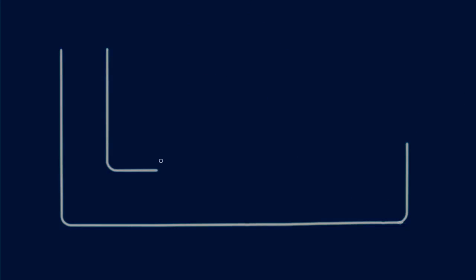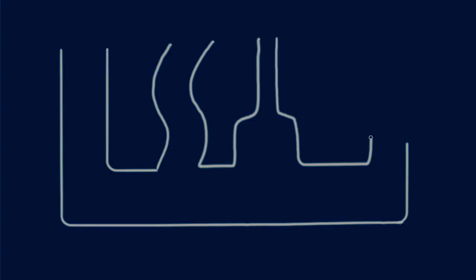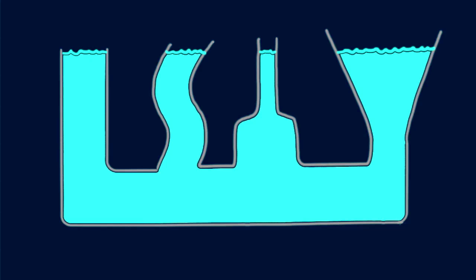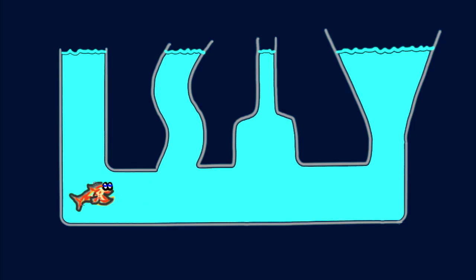Consider this set of vases connected at the bottoms and filled with water. These are called Pascal vases and are popular in classroom demonstrations. Although the volumes of water in each vase differ, the depth of water is the same in each. That means the pressure at the bottom of each vase is the same. A pet goldfish at the bottom of any of the vases experiences the same water pressure. Pressure depends upon depth, not volume. Hence, we say that water seeks its own level.